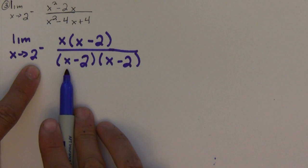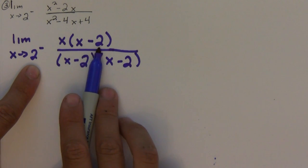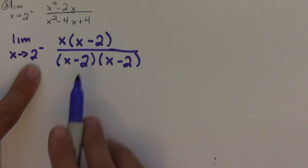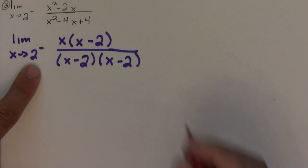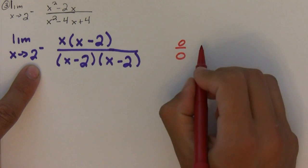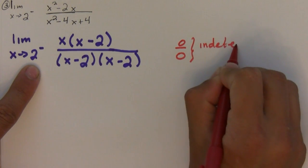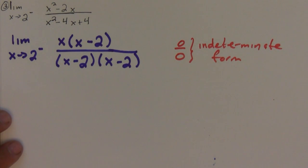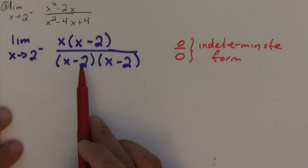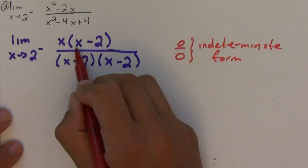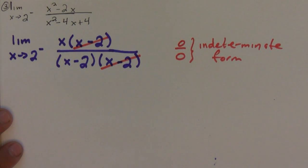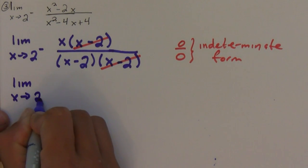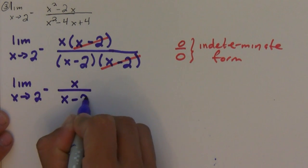Notice that if I plug in 2 on the bottom I would have 0, and on the top I would also have 0. So this is an indeterminate form, which means we have to do some algebraic manipulation to see what's going on. The x minus 2's are going to cancel, and if I rewrite it I would have the limit as x approaches 2 from the left of x over x minus 2.